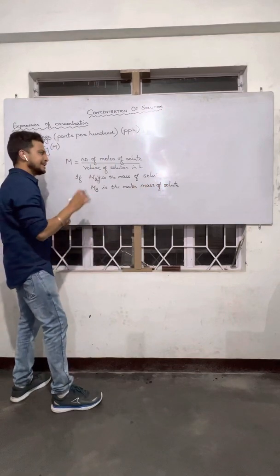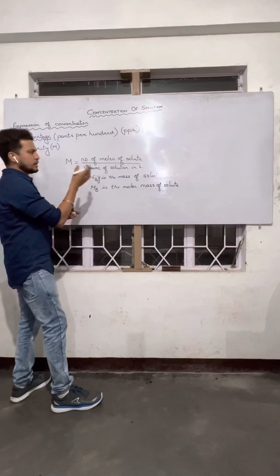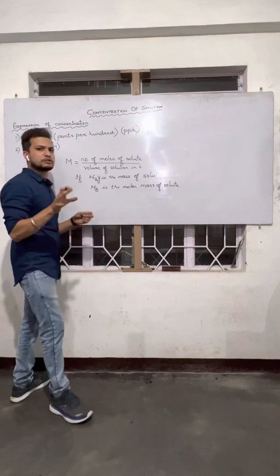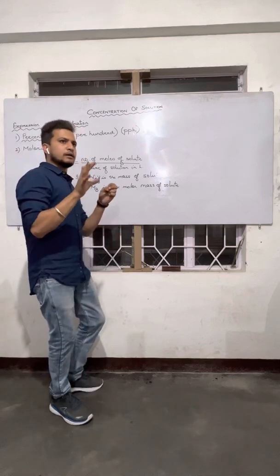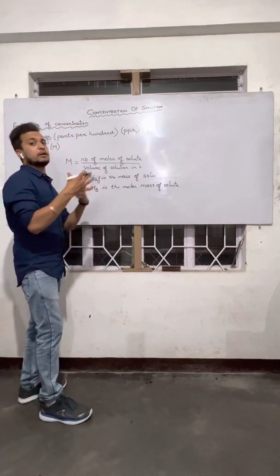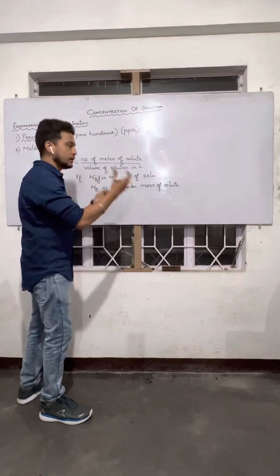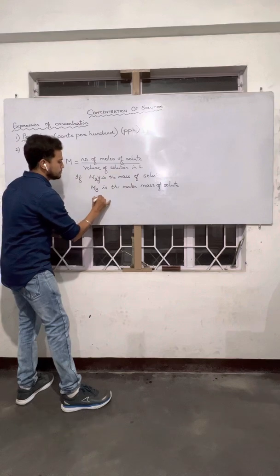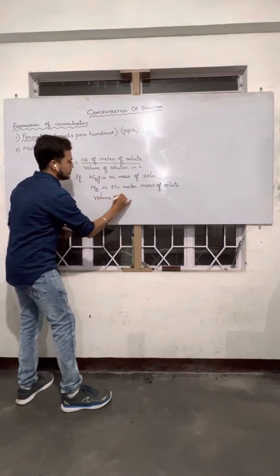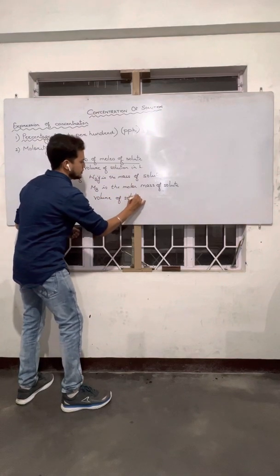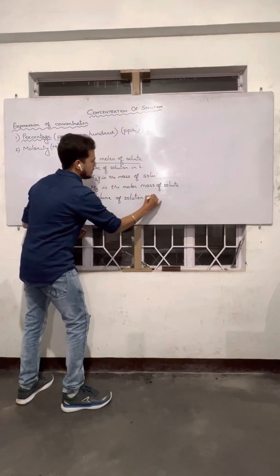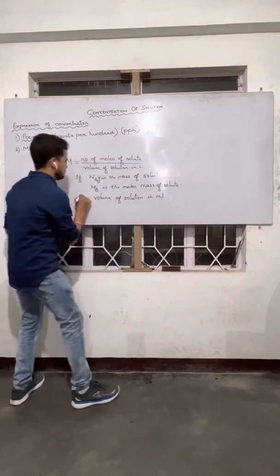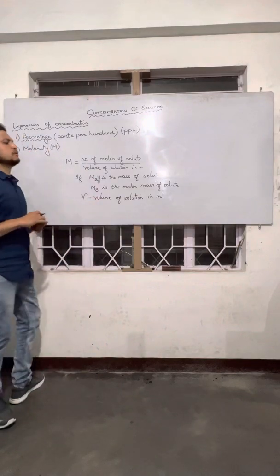Also, let's say we are given volume of solution not in liters but in milliliters. I'm trying to cover the case where problems have not given volume in liters but in other units — how to actually deal with that. So if the volume of solution in milliliters is given, let's say V is the volume of solution in milliliters.